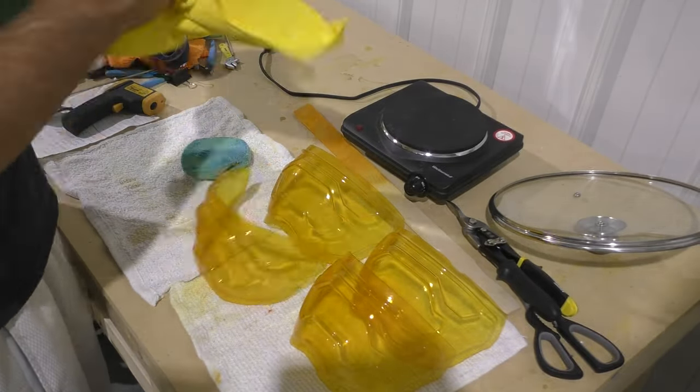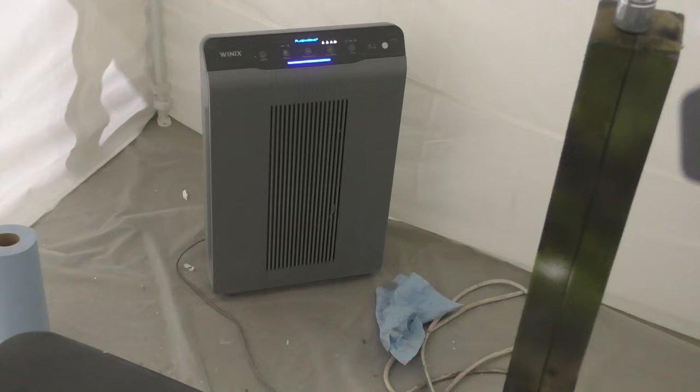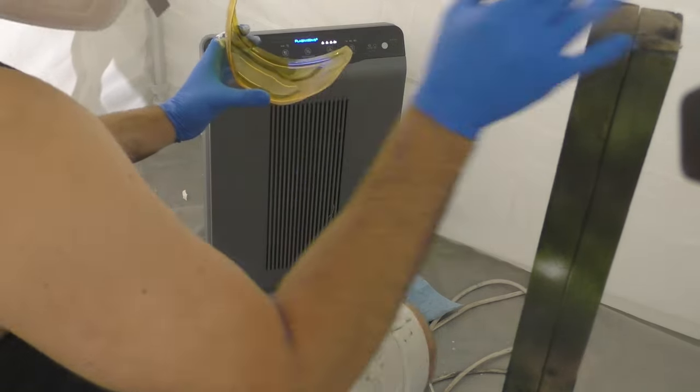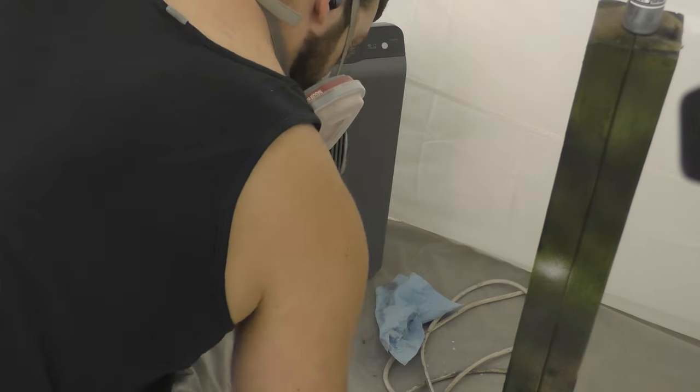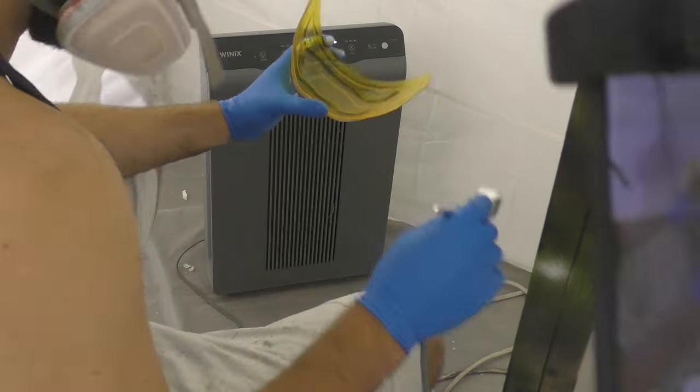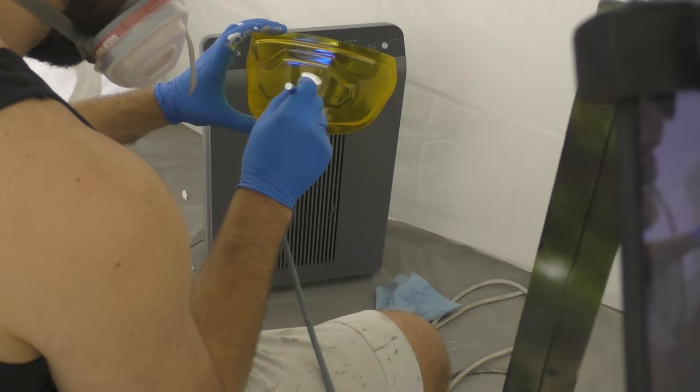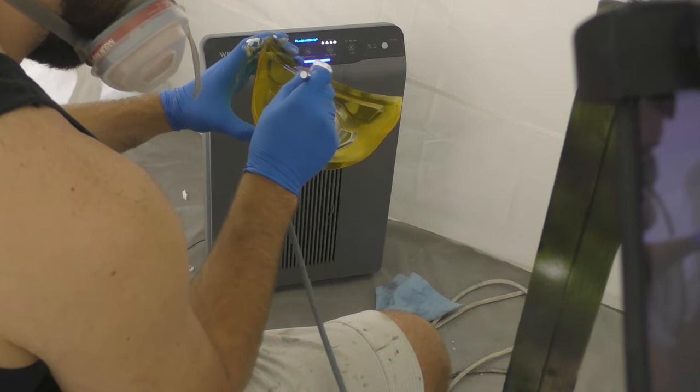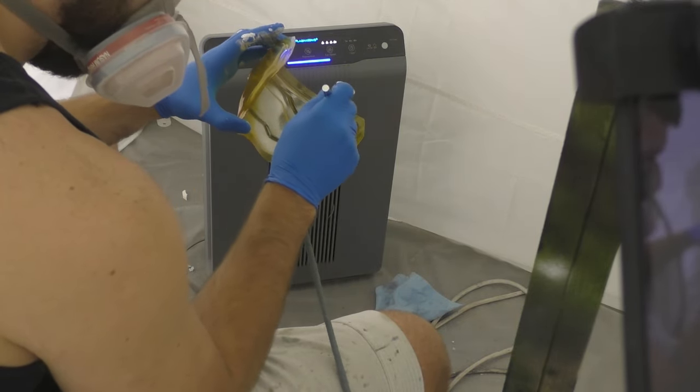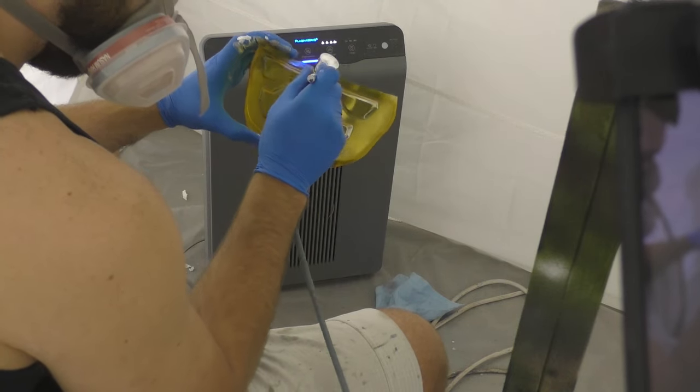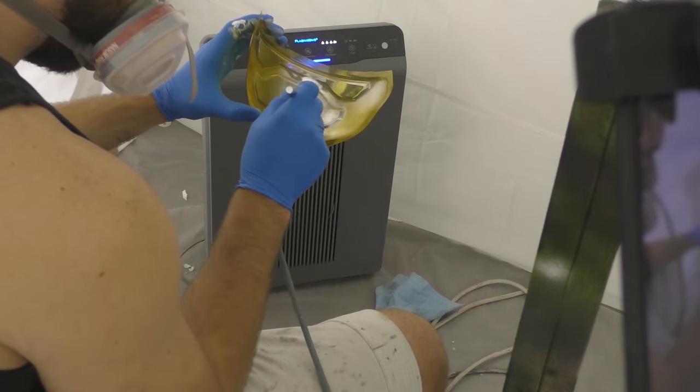Now the goal here is to be able to see out of the visor, but not have people see into the visor to see your eyes. And to do that, we're going to be using some Spaz Stix mirror chrome paint out of an airbrush. We're going to paint it all over the inside of the visor only. Now this will kind of cloud your vision inside a little bit, but if you remember from the beginning of the video, you couldn't see any part of my face once I put the helmet on, but I could see out fairly clearly.